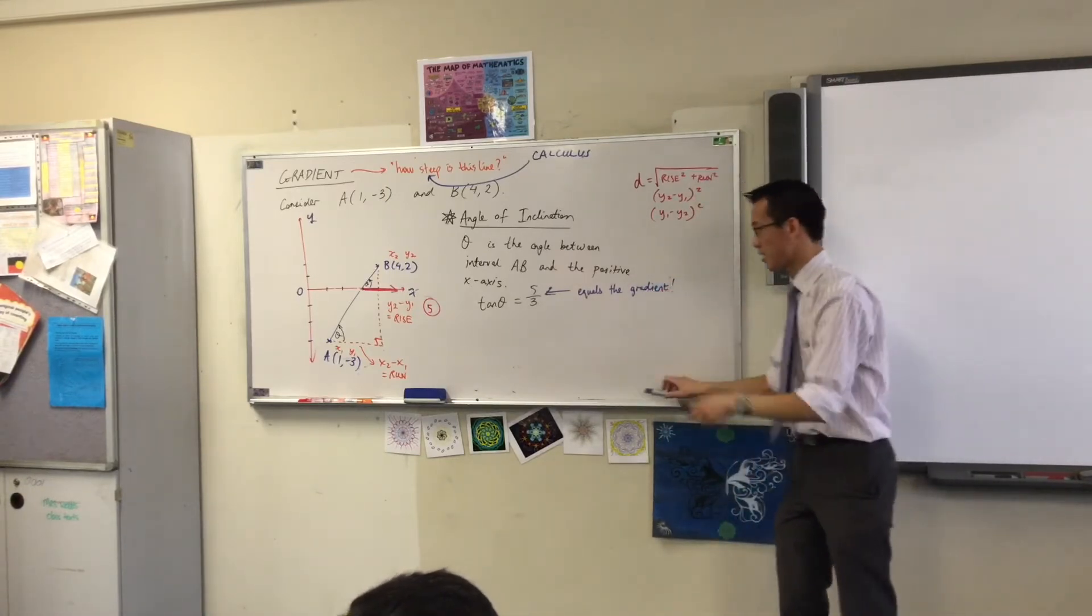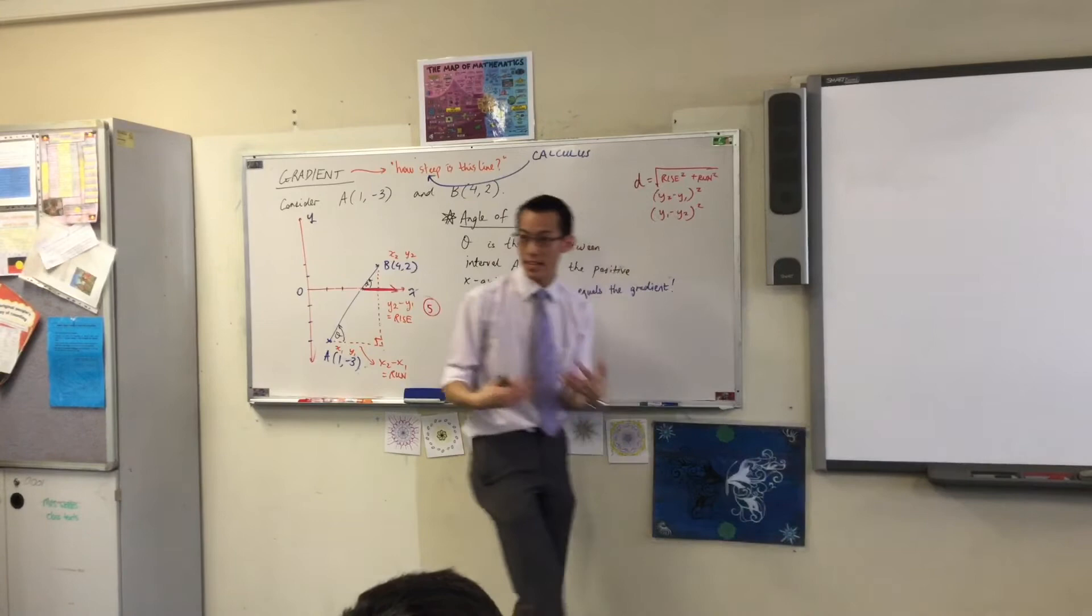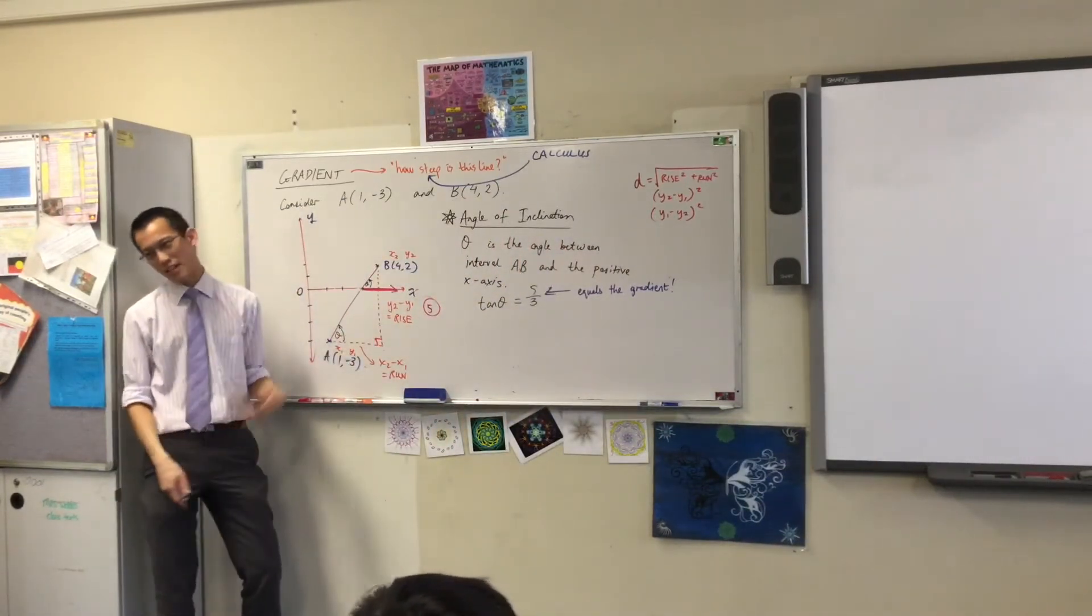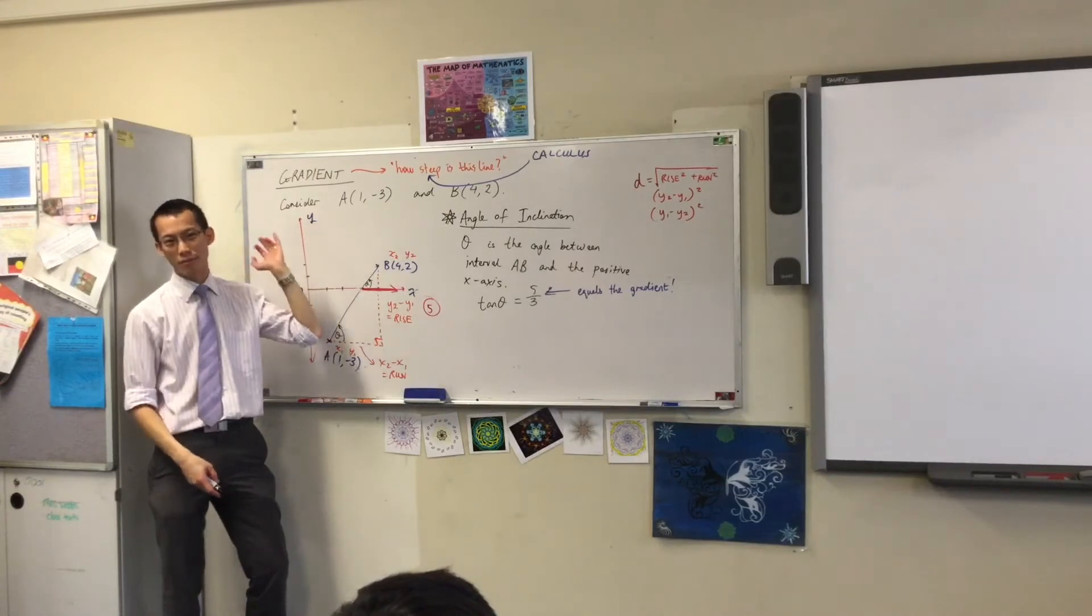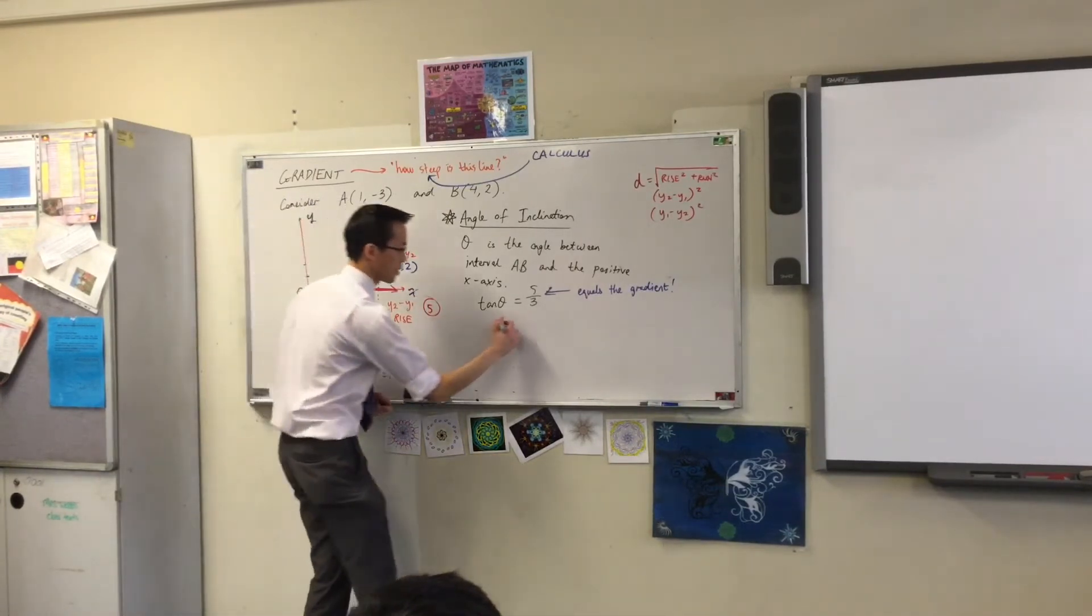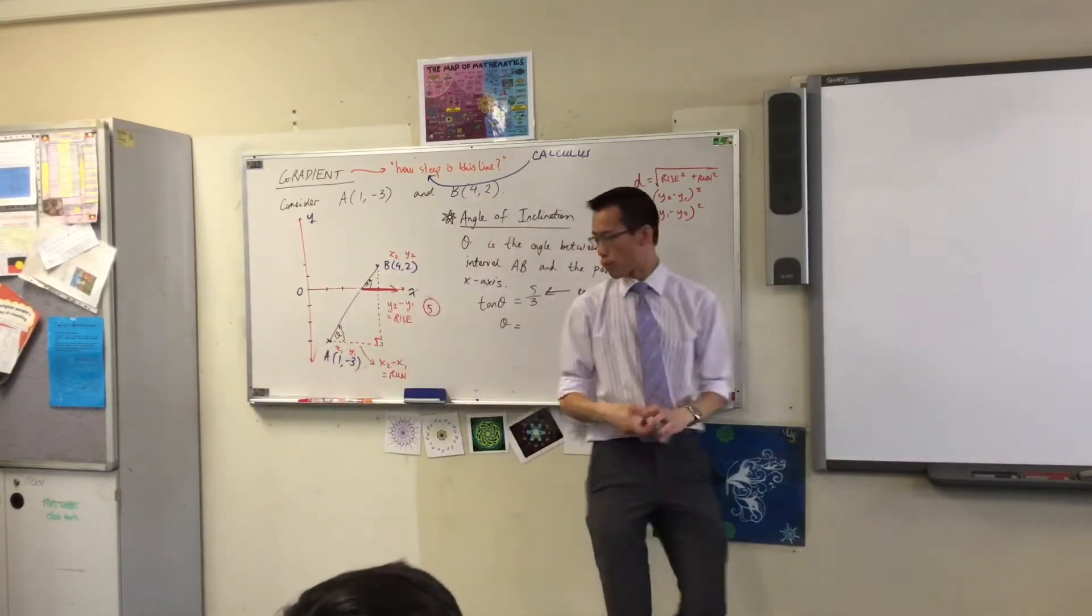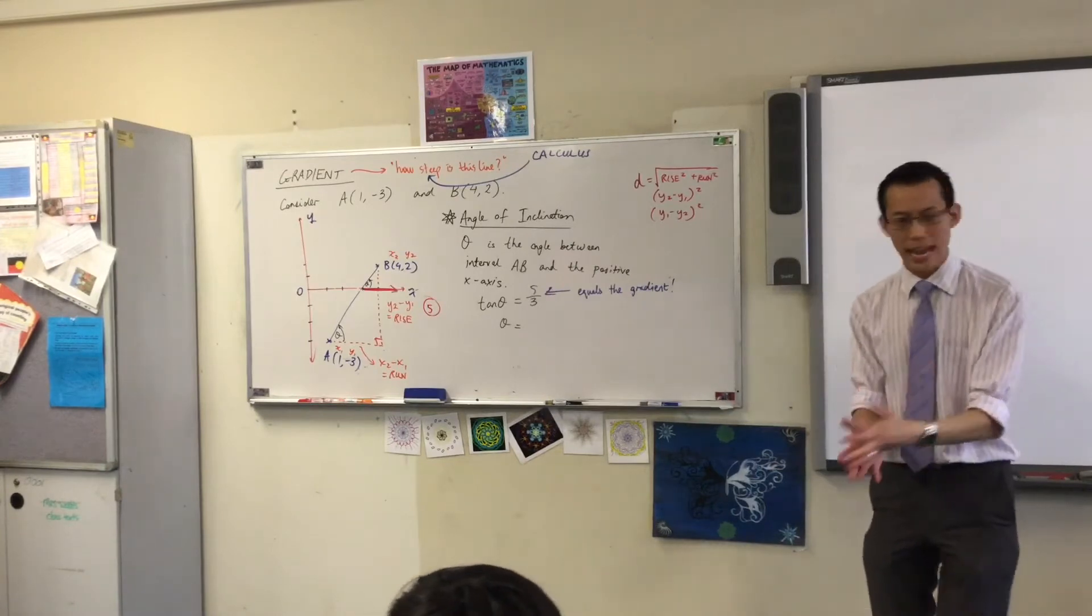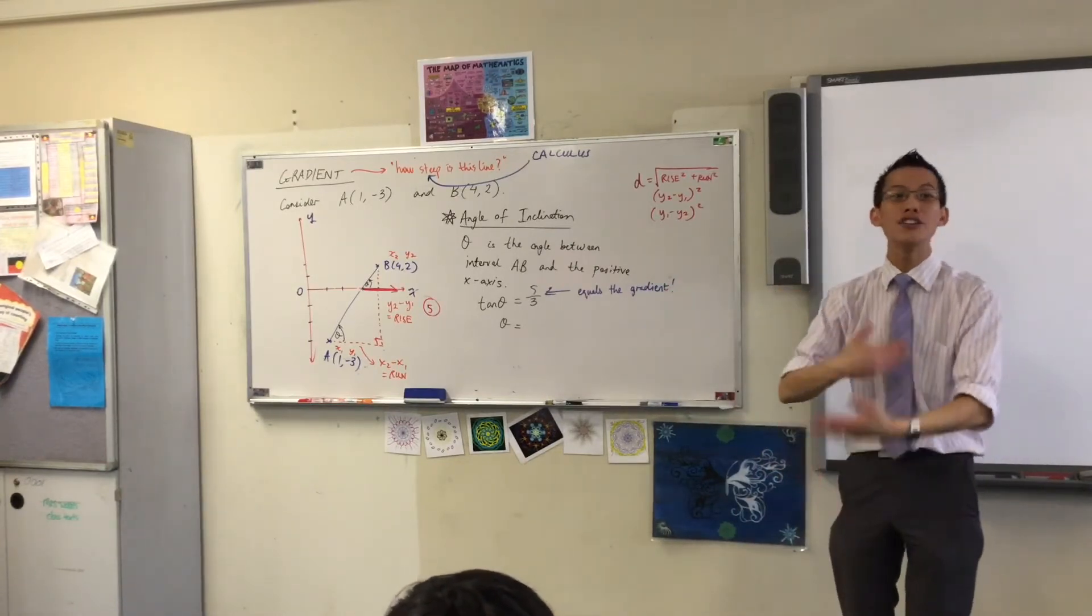Okay, I'll get to that in a second. So I've written down tan theta equals 5 over 3 from this right angle triangle. But I don't want tan theta, I want theta. So if you reach for your calculator now, theta equals. Now, you need to press a button on your calculator. There's a tan button, but you don't want tan. You've already got tan. You've got to undo tan.